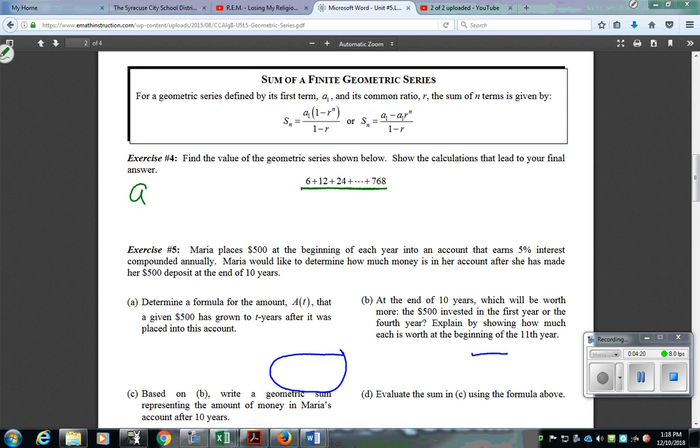So, I can use this formula for our geometric sequence to help us figure out what n is going to be. I know that the last term is 768. The first term is 6. And I know by multiplying, I'm multiplying by 2.